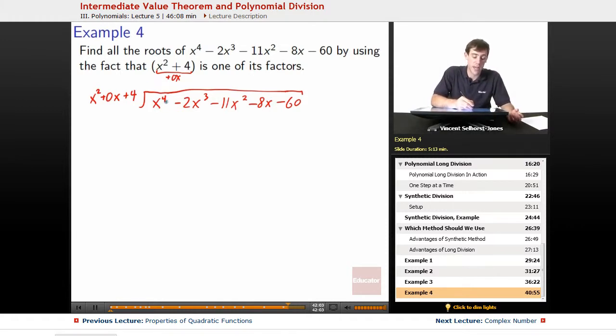So how many times does x squared go into x to the fourth? It goes in x squared, but we don't put it here. We put it here where it would line up for three different terms. One term, two terms, three terms. So it lines up on the third term over here, minus 11x.